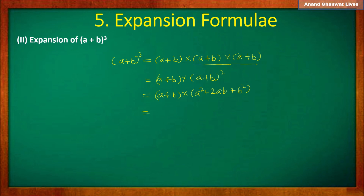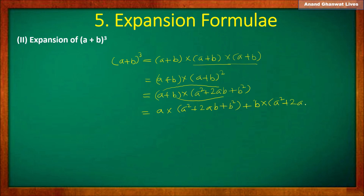Now multiply a squared plus 2ab plus b squared with binomial a plus b. Multiply a with a squared plus 2ab plus b squared, and b with a squared plus 2ab plus b squared. So: a into a squared plus 2ab plus b squared, plus b into a squared plus 2ab plus b squared.